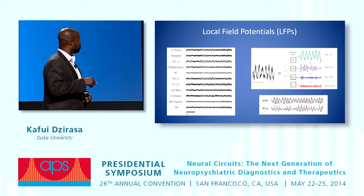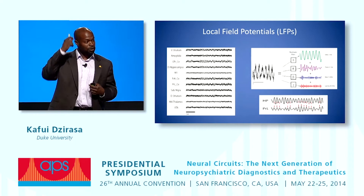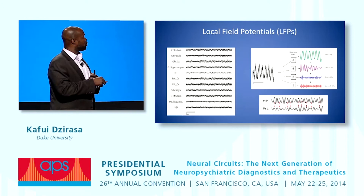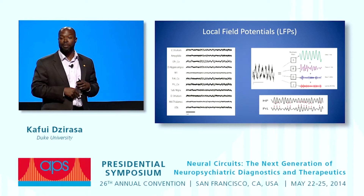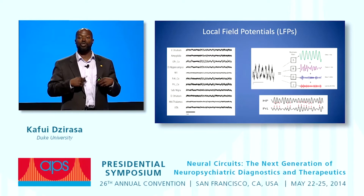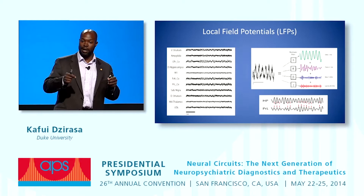A brief primer on the data we get. The first type is the local field potential — these are waves of electrical activity, the same sort of thing you see with EEGs or scalp electrodes, except recorded from the tip of a wire implanted in the brain. Within these waves there's oscillatory activity at different frequencies. The second thing is synchrony: how two waves oscillate together across time. This is the same principle used in functional connectivity in imaging research — waves that oscillate together are thought to lie within the same neurocircuit.